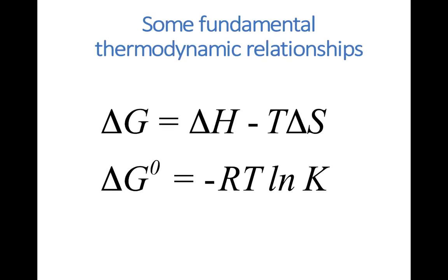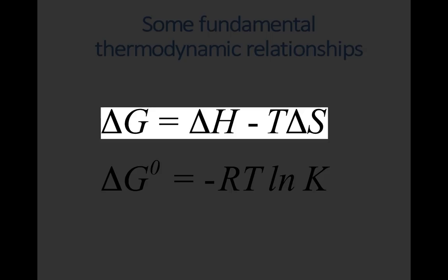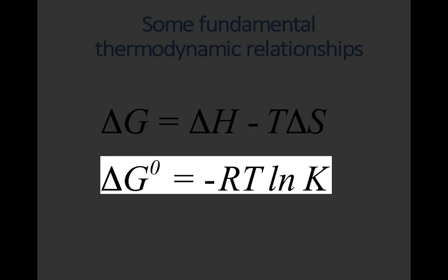Before I describe this method, I want to remind you of these two equations for calculating free energy changes. Recall that spontaneous reactions always reduce the free energy of a system, and that a system achieves equilibrium by minimizing its free energy. So when we calculate melting temperature, what we're really doing is calculating the temperature below which the free energy change for duplex formation will be a negative number. These two equations will help us to do that calculation. The first relates free energy change to the enthalpy and entropy changes of a system, while the second relates the free energy under standard conditions to the equilibrium constant.